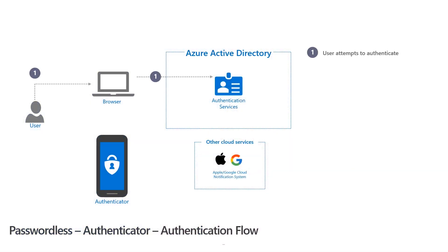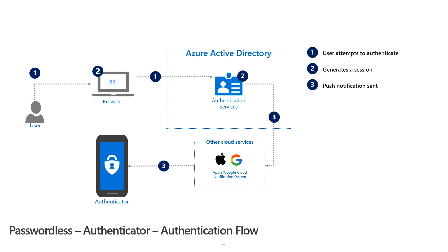Now let's take a look at what is happening behind the scenes. Our user wants to access some company resource. When they type in their user principal name and submit it to Azure AD, authentication services determines that the user is attempting to sign in using Microsoft Authenticator. Authentication services will then generate a few things. It will create a session for this authentication, and it will generate a set of three pseudo-randomly generated two-digit numbers. One number will be sent to the browser to be displayed on the web page, while all three numbers will be sent to the authenticator app via a push notification through the Apple or Google cloud messaging system.